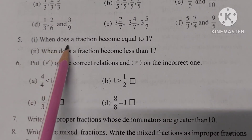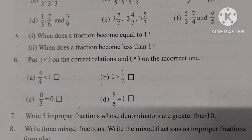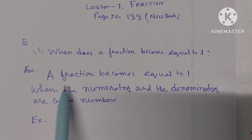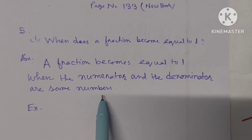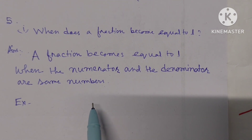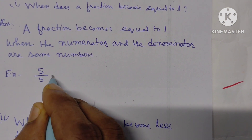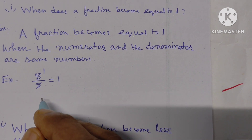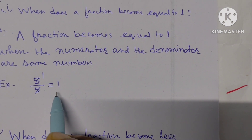When does a fraction become equal to one? A fraction becomes equal to one when the numerator and the denominator are the same numbers. That means, here the numerator and denominator are the same. When the numerator and denominator are the same, then the fraction becomes equal to 1.